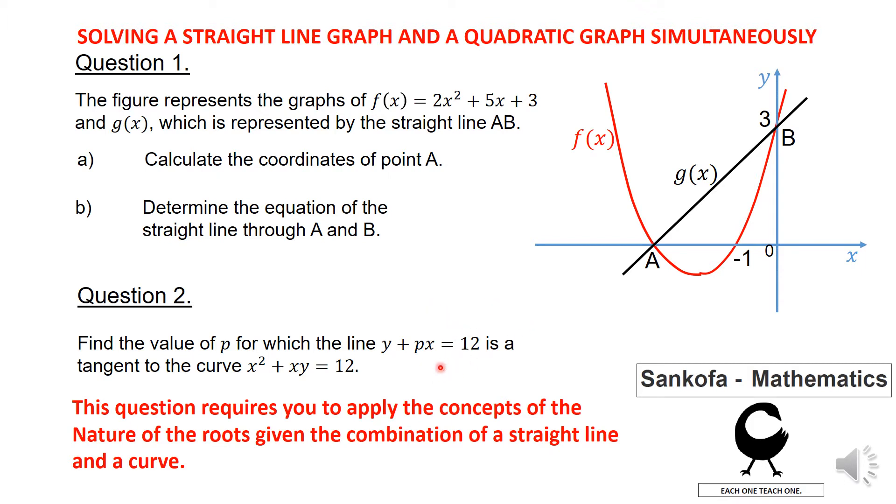Whenever you are solving those questions, remember you are not solving for the value of the quadratic equation or the roots, but we are looking for a p value here. You can also see that both these functions are equal to 12, which means they are actually equal to each other. So when you are dealing with this, you should remember the nature of the roots. When you are given a combination of a straight line and a curve, the discriminant comes into play.